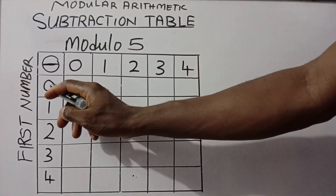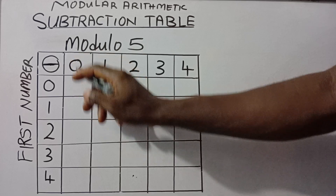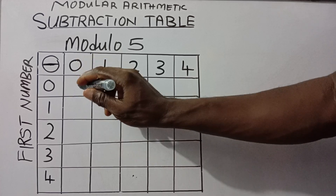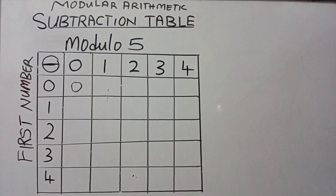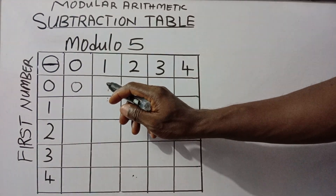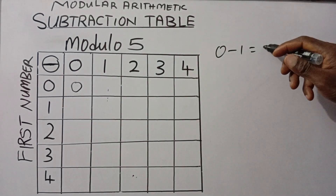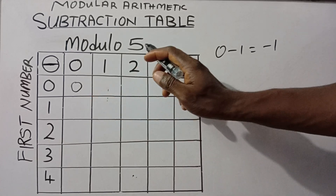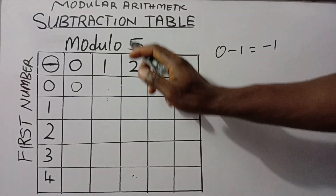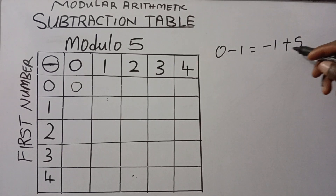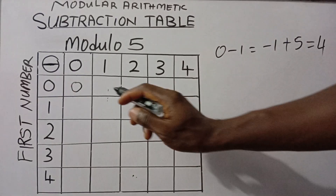We start with 0 versus 0. So 0 minus 0 will give us 0, and we have 0 here. In the next cell, we have 0 minus 1, which gives us minus 1. And once it gives you a negative, you add the modulus to that number — that will be plus 5 — so minus 1 plus 5 will give us positive 4. So what we're going to have here will be positive 4.